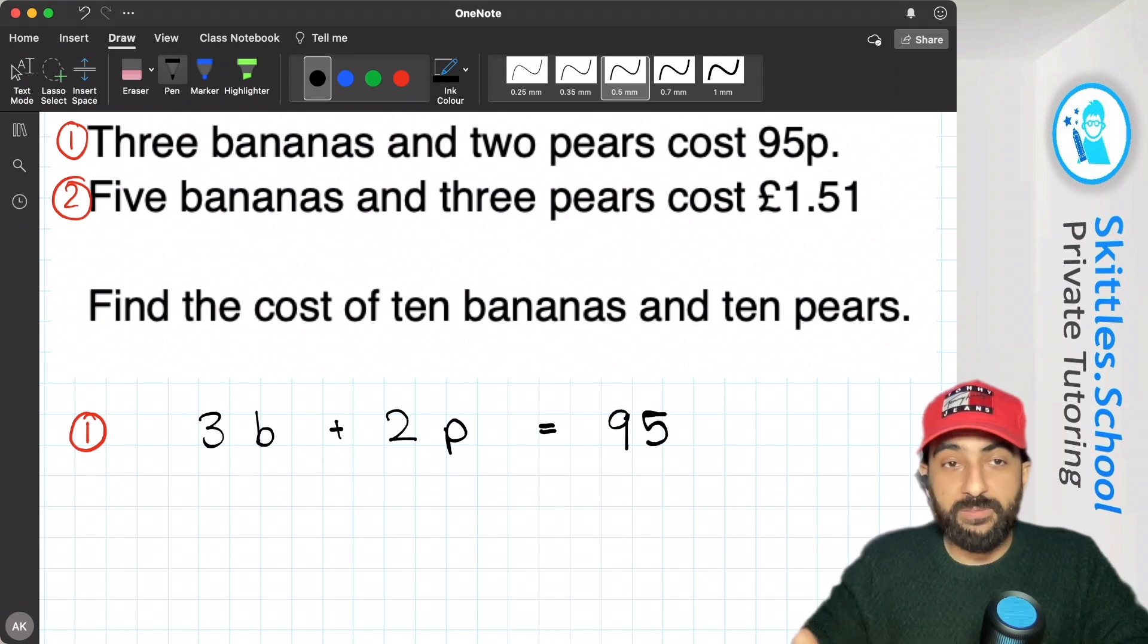Now I'm using B for bananas and P for pears, but any letter works. X and Y are also okay.